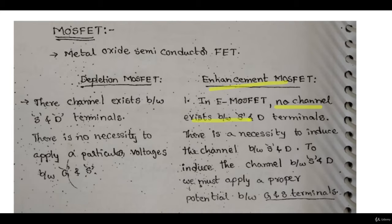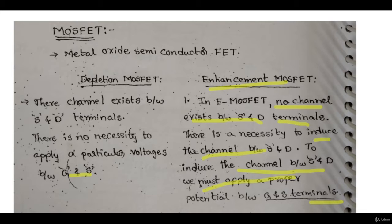In enhancement type, there is no channel made by the manufacturer — no channel exists between source and drain terminals. By tweaking the value of VGS you induce a channel. To induce the channel between source and drain, you must apply proper potential between the gate and source terminals. That is the major difference between depletion and enhancement type.